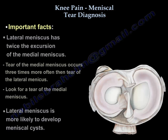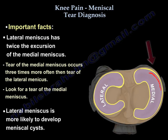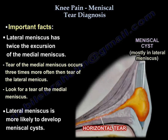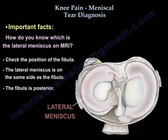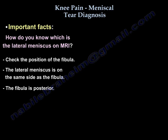The lateral meniscus has twice the excursion of the medial meniscus. That is why the medial meniscus tears three times more than the lateral meniscus, so look for medial meniscus tears as they are more common. Also, the lateral meniscus will have most of the meniscal cysts. On an MRI, to identify which is the lateral meniscus, check the position of the fibula — the lateral meniscus is on the same side as the fibula, and note that the fibula is posterior.